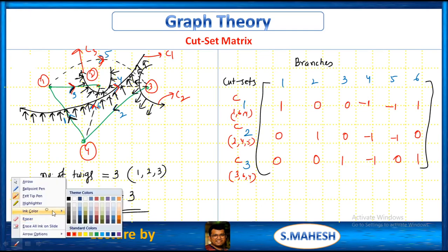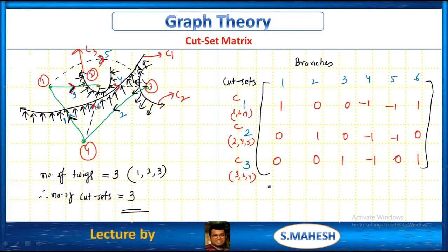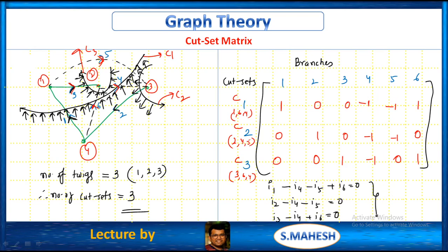From this, the equations are: I1 minus I4 minus I5 plus I6 equals 0; I2 minus I4 minus I5 equals 0; I3 minus I4 plus I6 equals 0. By solving these 3 equations, you will get the voltages. This is about the concept of the cut set matrix.